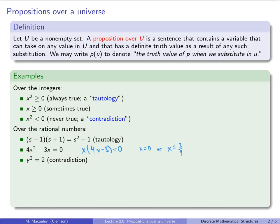The last statement over the rationals is y² = 2. I'm going to ask you to believe — something we will prove later — that the square root of 2 is not a rational number; we cannot write it as a quotient of two integers. So y² = 2 is never true for any rational number y. It has a definite truth value (false) as a result of any substitution, so it is still a proposition over U — it just happens to be a contradiction.